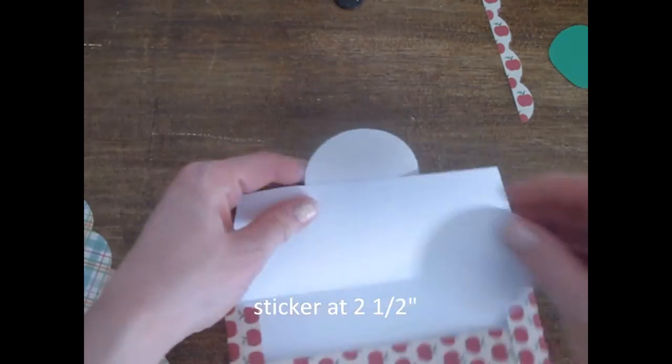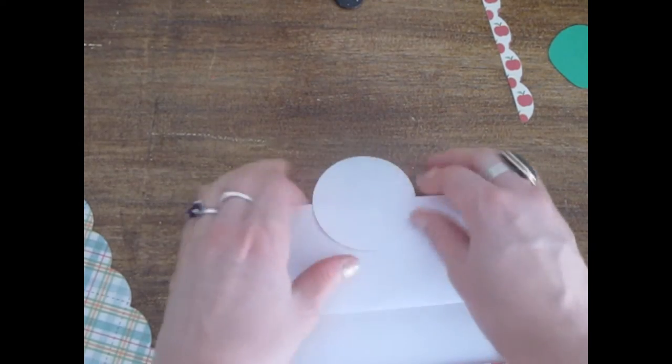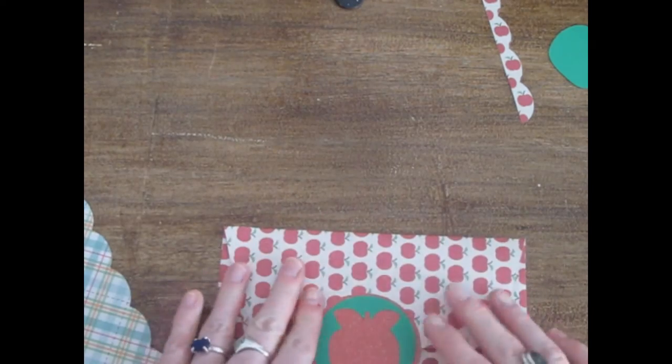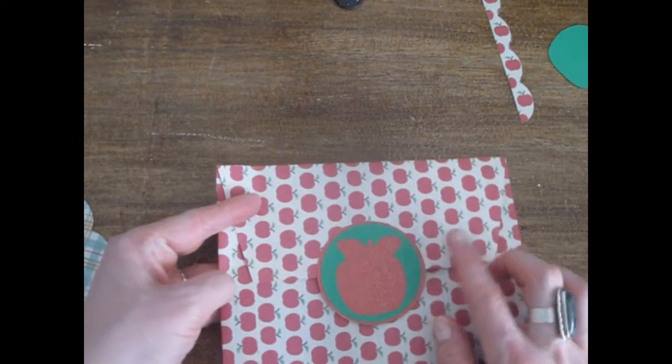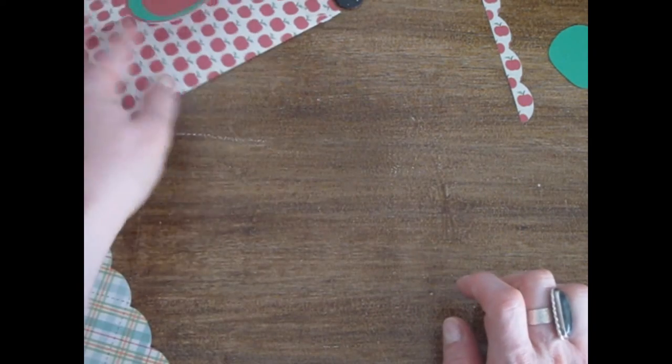So there is the sticker and the envelope. Envelope at six and three quarters, and the sticker at two and a half.